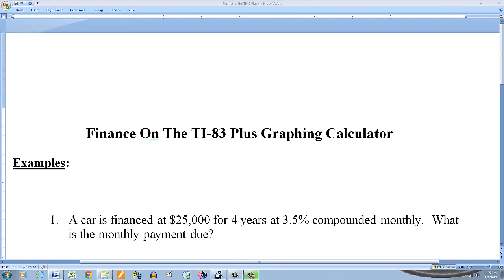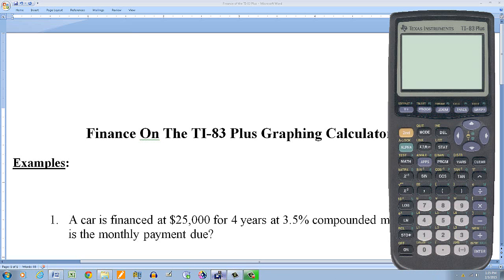A car is financed at $25,000 for four years at 3.5% compounded monthly. What is the monthly payment due? So this can come in handy if you're looking for a car. So let's look at the calculator.